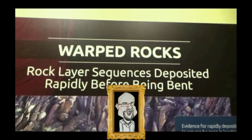Warped rocks — rock layer sequences deposited rapidly before being bent. Are we talking about warped rocks or rapid deposition? Creationists have failed to demonstrate rapid deposition on a global scale, so apparently just showing real bent rock formations is supposed to somehow prove the unrelated claim of rapid deposition. In reality, this bending of rock layers is well understood and has nothing to do with rapid deposition. Some rock material becomes quite plastic under extreme pressure and heat. If the pressure does not exceed the internal strength of the rock, fracturing does not occur and we end up with deformed or bent rock layers.